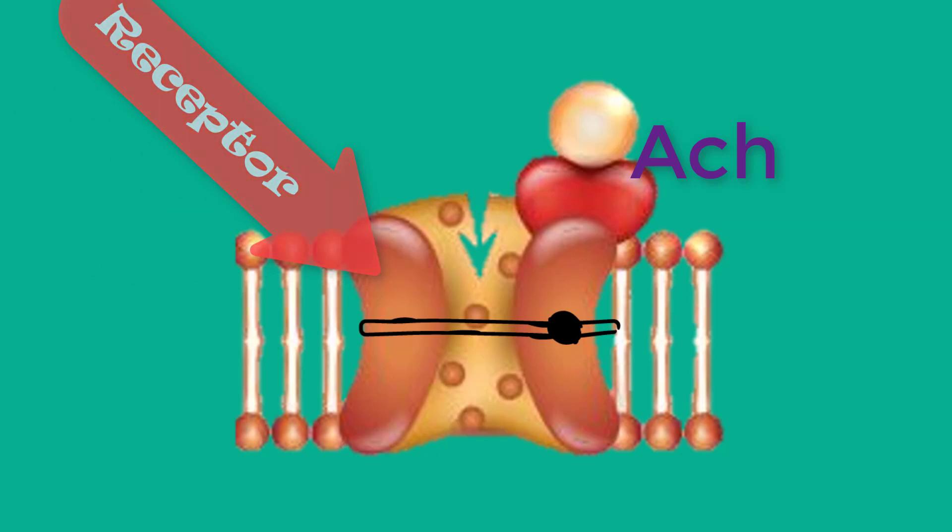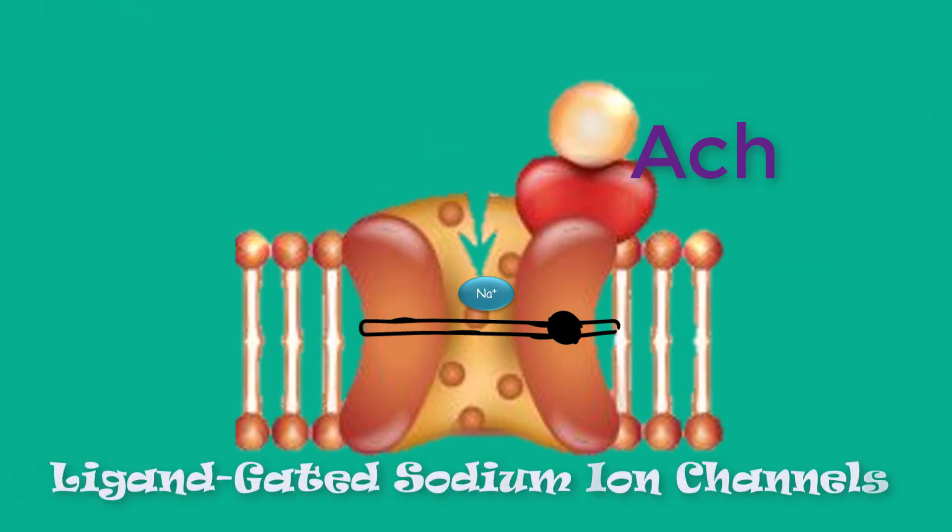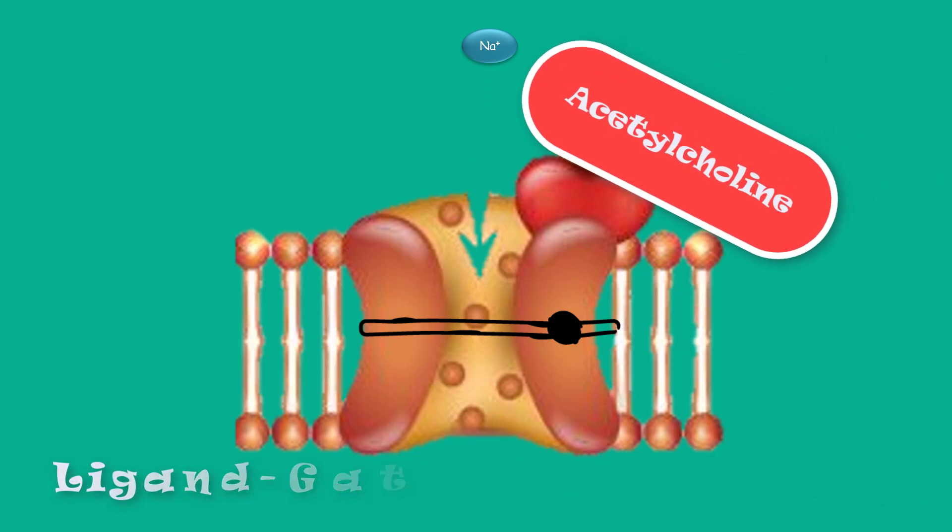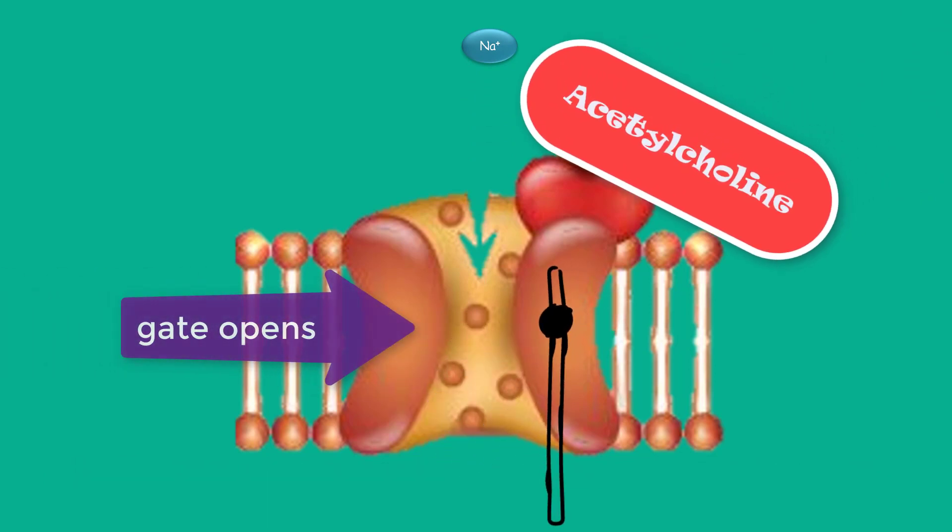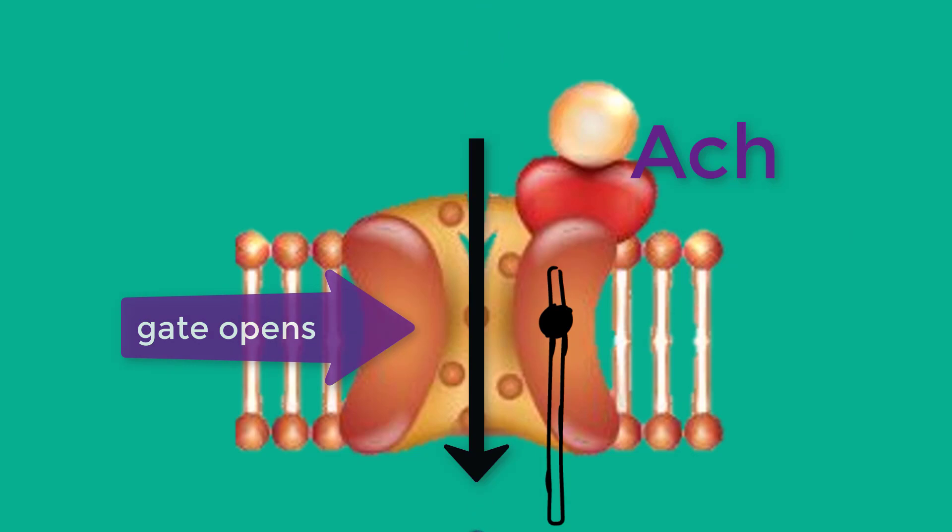Nicotinic acetylcholine receptors are ligand-gated sodium ion channels. When acetylcholine binds to these receptors, the channels open and sodium floods into the muscle fiber.